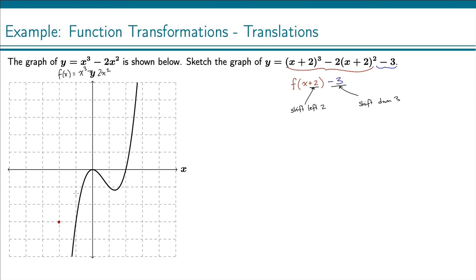And I can even take this little shape just so I remember that's the shape that's happening. And then I've got this local minimum here. And I can move that, again, 2 to the left: 1, 2, and then down 3: 1, 2, 3. And that's right there.